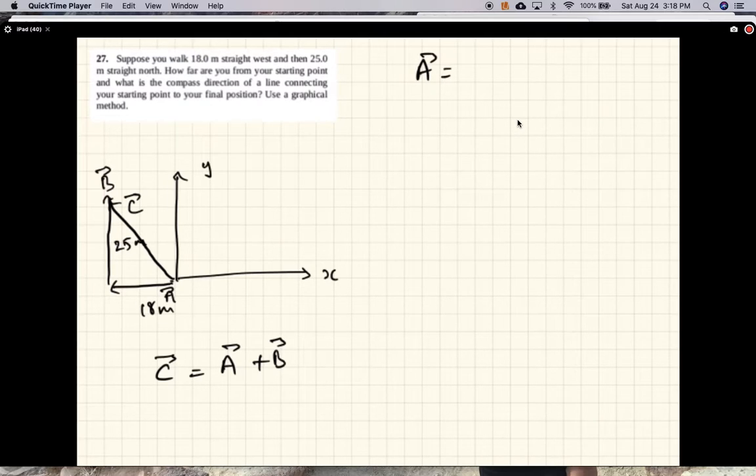We'll write A and B in component form. A is minus 18i plus 0j, and B is 0i plus 25j.